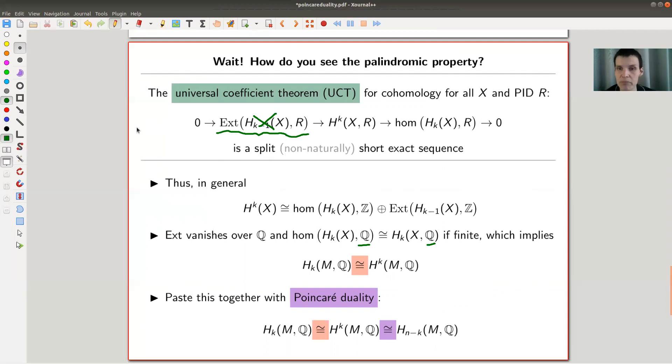Like I go to a field Q, and you get an isomorphism of the k-th homology with the k-th cohomology—k-th homology and k-th cohomology. But by Poincaré duality, you also know that the, so this is kind of the isomorphism that you get from the statement from the universal coefficient theorem.